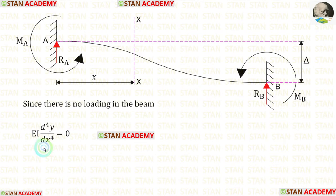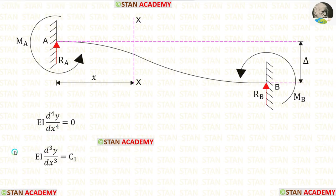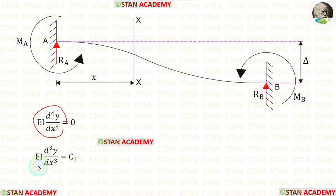So, EI d⁴y/dx⁴ will be 0. Let us integrate with respect to x. We will get EI d³y/dx³.